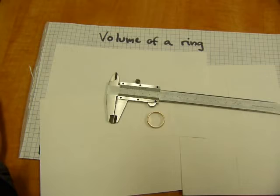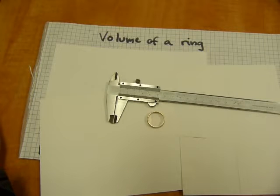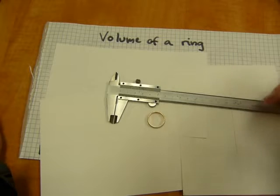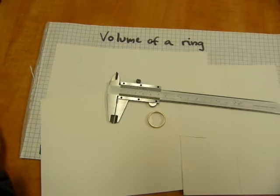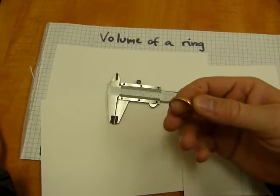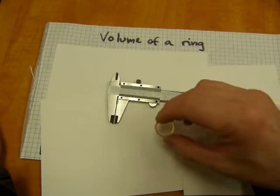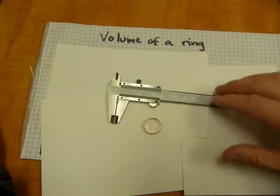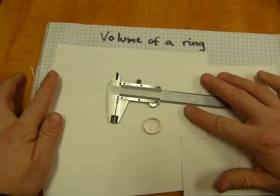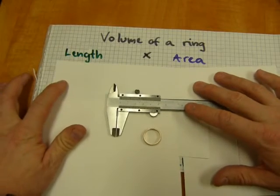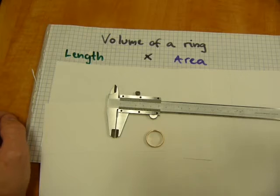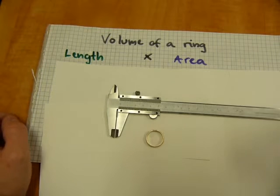You could determine the volume of this ring by dropping it into water and see how much the water level rises, but that has a fair amount of uncertainty or inaccuracy because it doesn't fit into the smallest possible graduated cylinder. To figure out the volume of anything is in principle relatively straightforward. You have to multiply its length by its area.